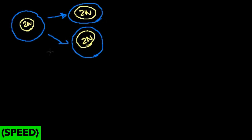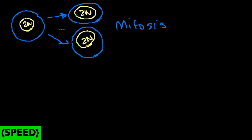We have a video on mitosis where we go into the phases: prophase, metaphase, anaphase, and telophase. Mitosis occurs in pretty much all of our somatic cells — skin cells, hair cells, and all the tissue in our body as it duplicates itself. Meiosis occurs in the germ cells and is used to produce gametes to facilitate sexual reproduction.